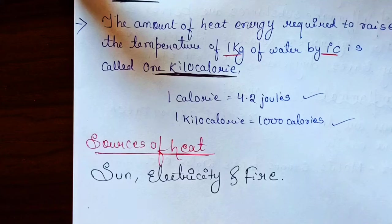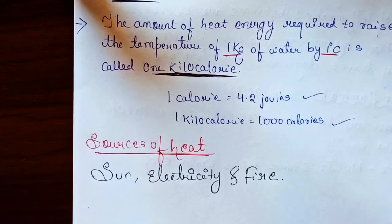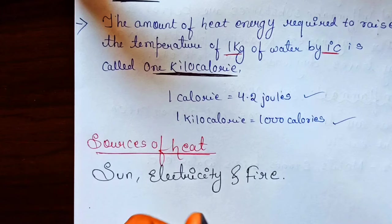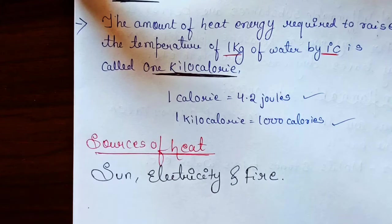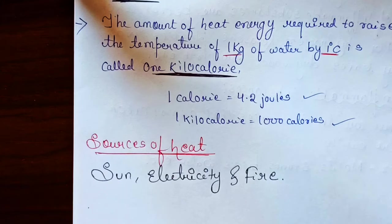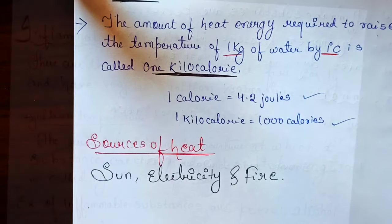So the definition of heat, its concept, and its units are now complete. Now, what are the sources of heat? The best example is the Sun, which gives us heat energy. We also get heat from electricity — for example, we use induction plates which convert electricity into heat to cook food. Fire is another source of heat energy.